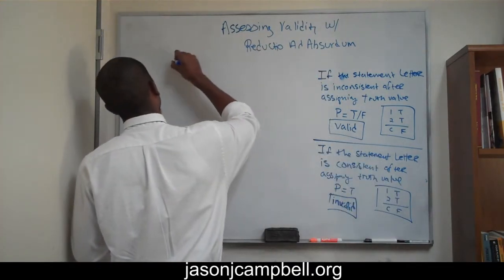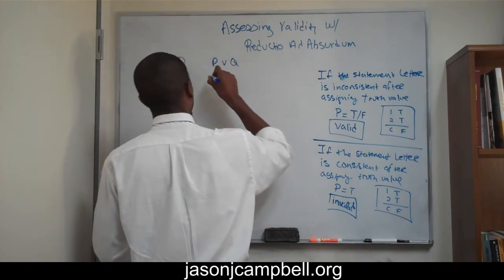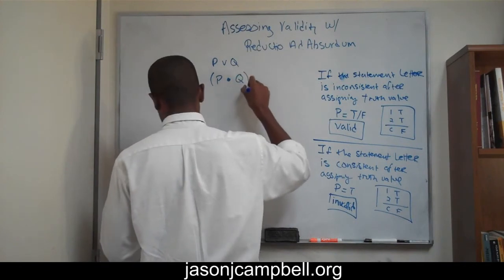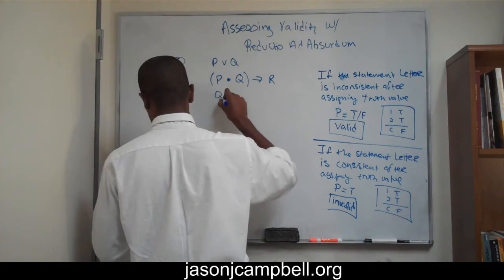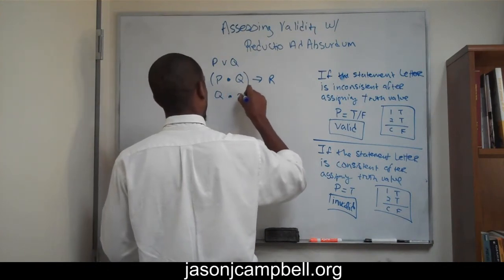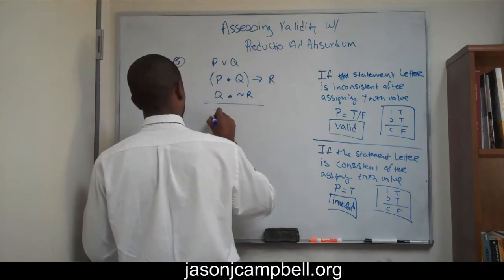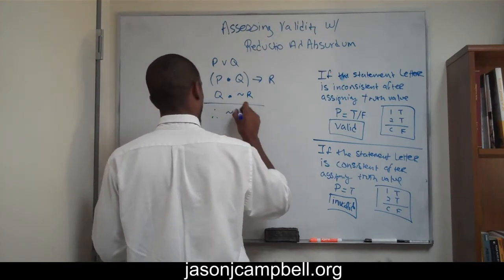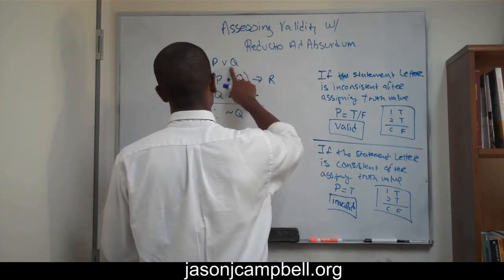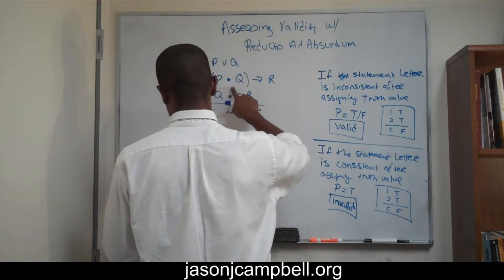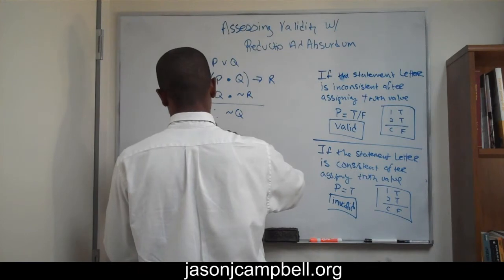So this is number five. Number five is: P or Q. P and Q. If P and Q, then R. And then we have Q and not R. This one's a lot more complicated. And not Q. Let me make sure I did that right. P or Q. If P and Q, then R. P and not R, therefore not Q.